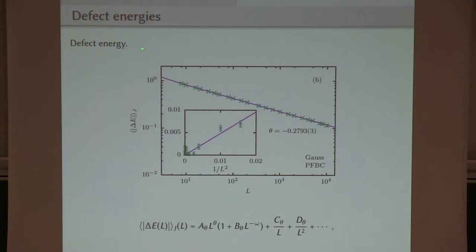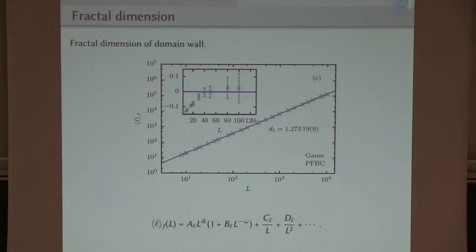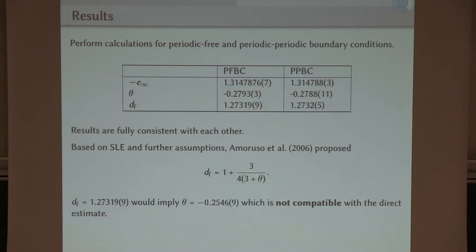Then let's look at the defect energy. This should decay because we expect a negative stiffness exponent. And again, taking scaling corrections into account, we get some stiffness exponent up to something like four significant figures. Again, for the same type of boundary conditions.